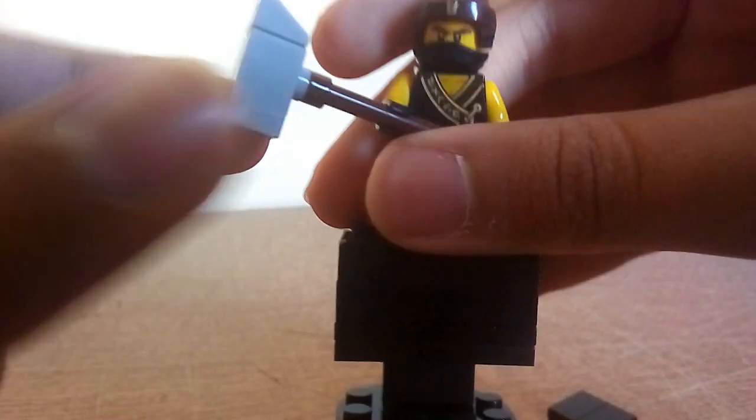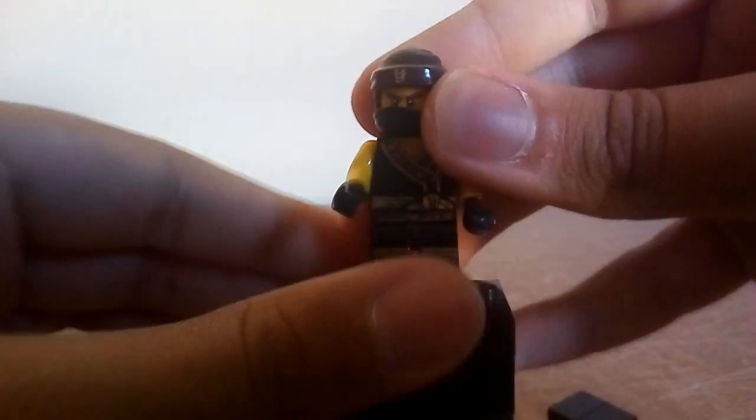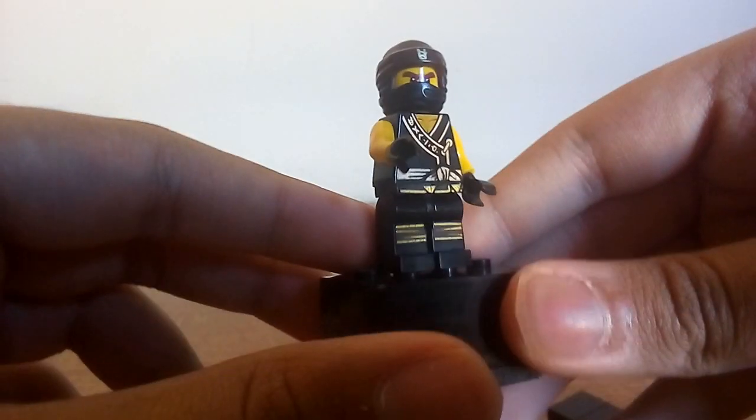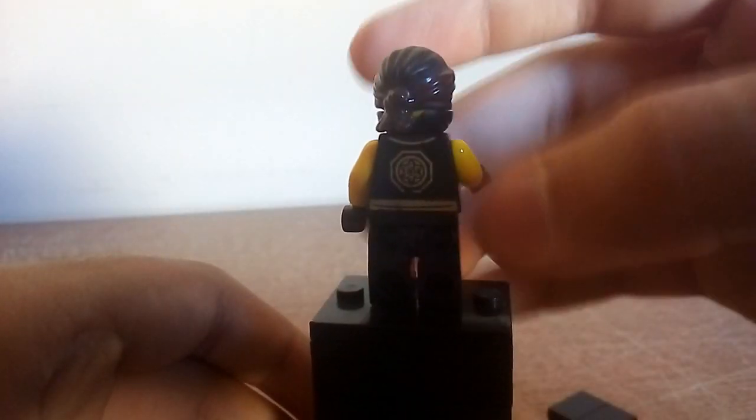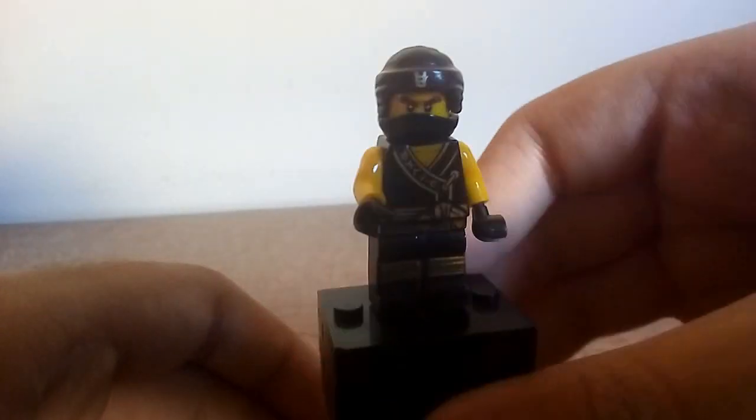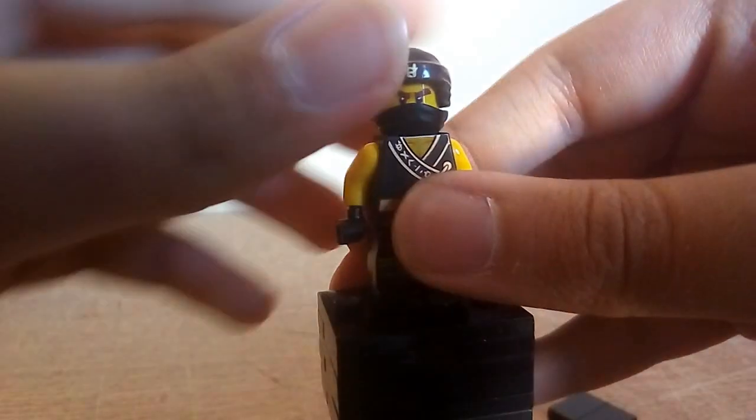There's a cheese slope here and a one by one plate under there. The torso printing, I love it. You can see some straps on his leg and he's sleeveless. On the back is the old logo that all the ninja used back in the day, like basically in the LEGO Ninjago movie.